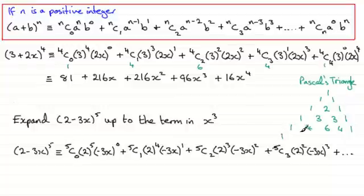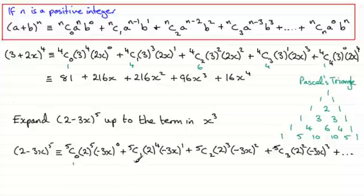Put a 1 down, then 1 and 4 gives 5; 4 and 6 is 10; 6 and 4 is 10; 4 and 1 is 5; then put a 1 on the end. So 5C0 is 1, 5C1 is 5, 5C2 is 10, and 5C3 is also 10. That saves you time if you want to use this method.